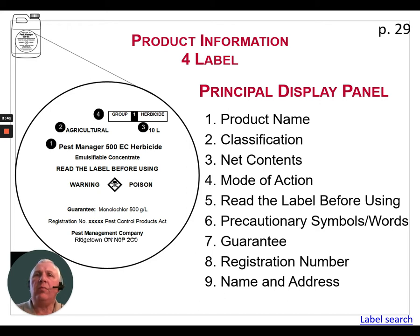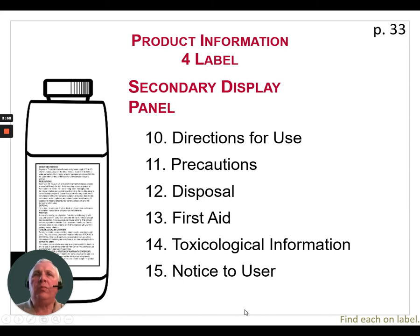Last but not least is the name and address of the company that produced the pesticide — in this case Pest Management Company, Ridgetown. The secondary display panel on some pesticides may simply be a small sticker on the back of a jug, but often it's a very large booklet. It will tell us directions for use, including the pesticide rate and how much carrier to mix with it for a sprayable product.